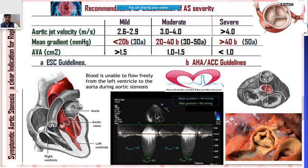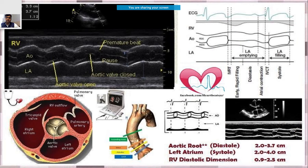In aortic stenosis, blood is not able to flow freely from the left ventricle to the aorta into the systemic circulation. You should be able to see echocardiographic images at four different levels: the LVOT (left ventricular outflow tract), then the annulus, then the sinus, and finally the ascending aorta.